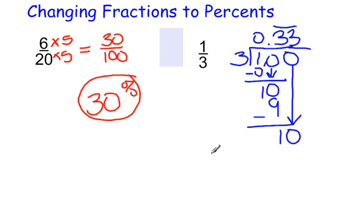We still have to change our decimal to a percent. So we have 33 hundredths. In order to change our decimal to a percent, we have to multiply by 100.